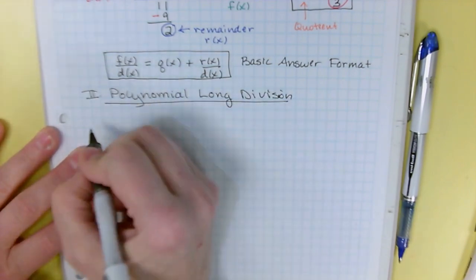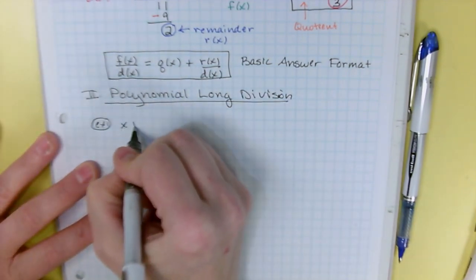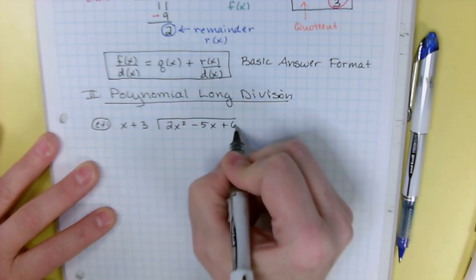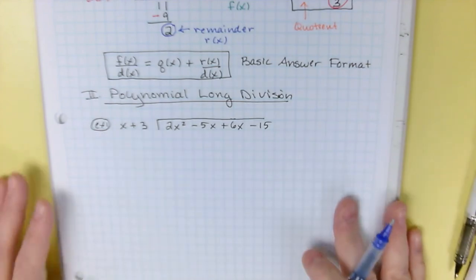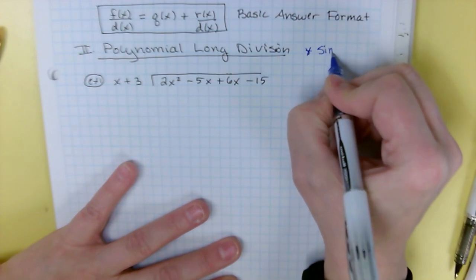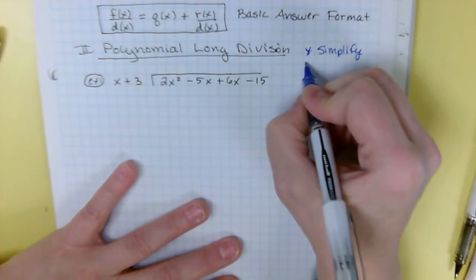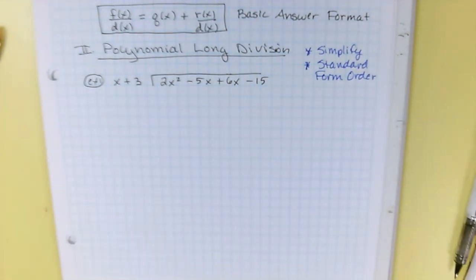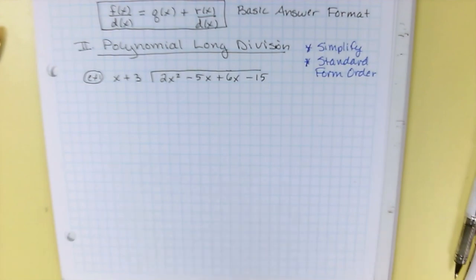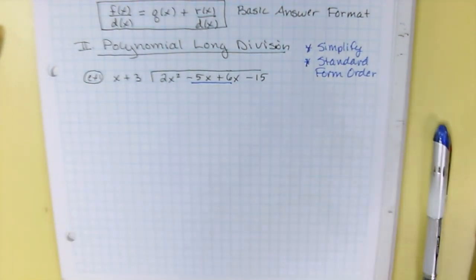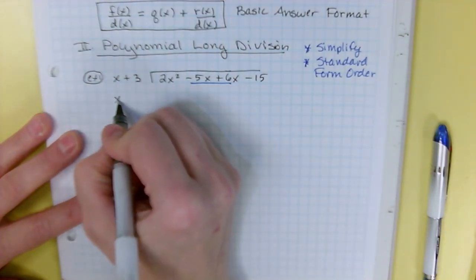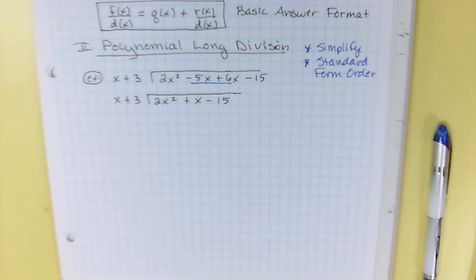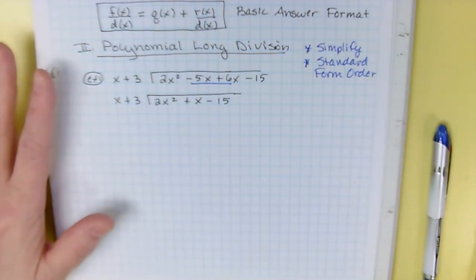So we're going to start with an example. We're going to take x plus 3 as the divisor and divide it out of 2x squared minus 5x plus 6x minus 15. To set this up for long division, you need to make sure that you simplify both the function and the divisor, and that they are in standard form order. The x plus 3 is fine, but on the inside I've got a couple of x's that need to be combined. So x plus 3, and then I'm going to simplify: 2x squared plus x minus 15. This one has no gaps. It goes x squared, x, and then number.